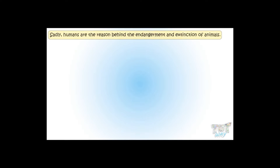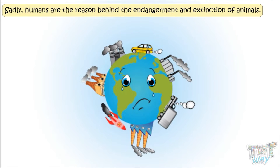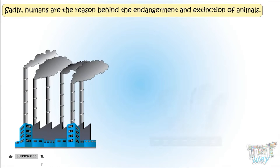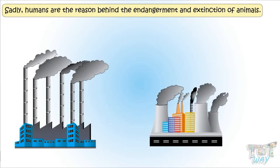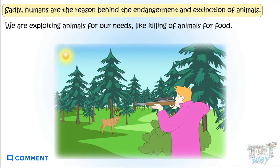The most sad part is that the main reason behind endangerment and extinction of species is humans — that is we and our development activities. We are exploiting animals for our needs, like killing animals for food.